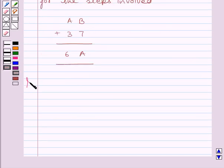Let us now start with the solution. First of all, let us rewrite the given puzzle: AB plus 37 equals 6A.